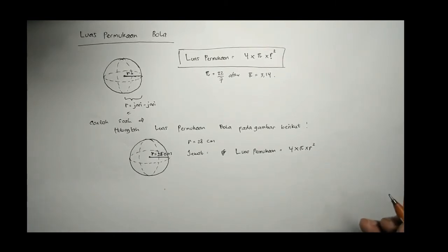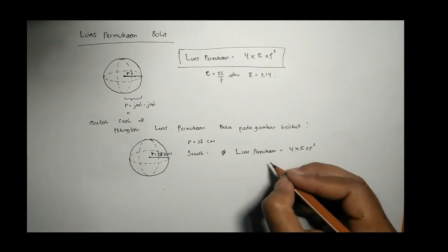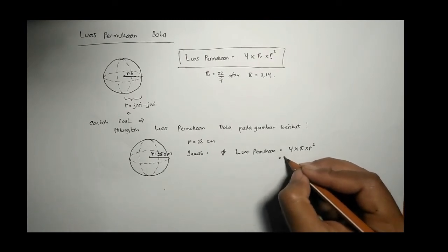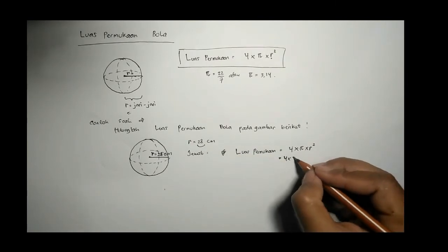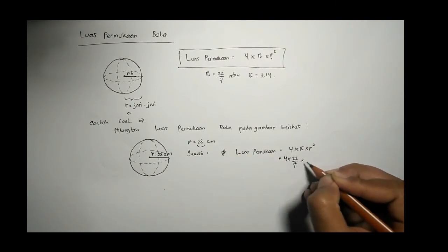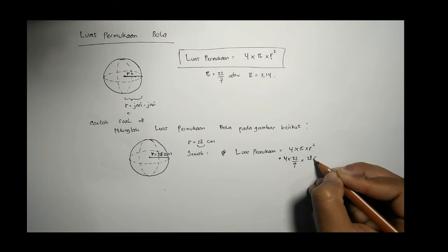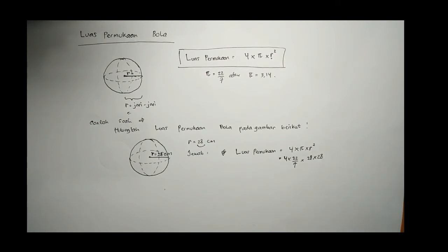Karena R nya 28 ini kelipatan 7, berarti kita pakai π 22/7 dikali 28 kuadrat atau 28 kali 28.